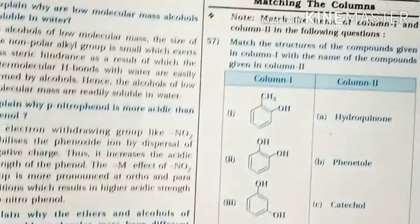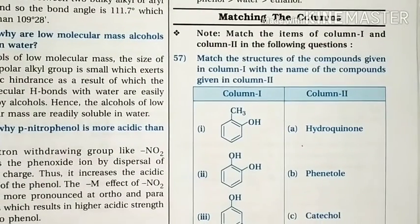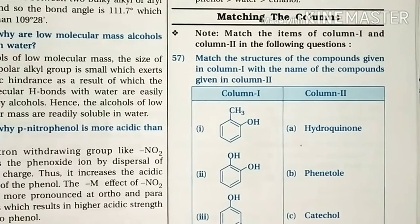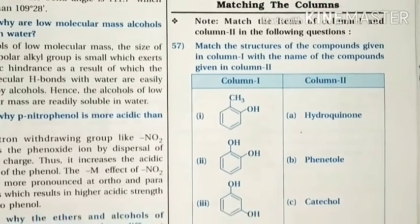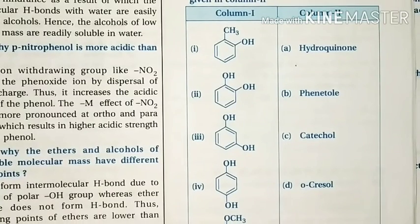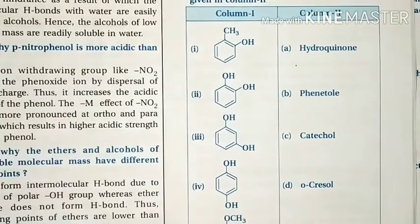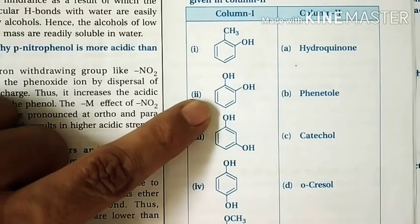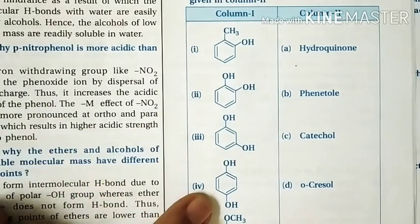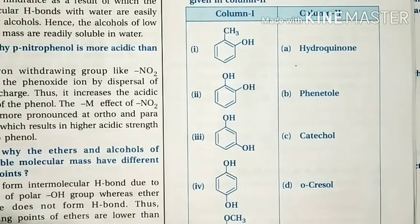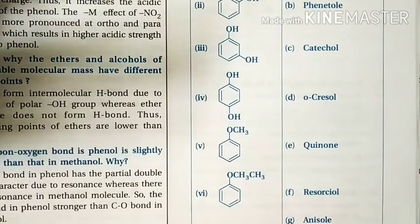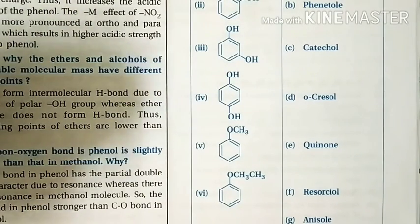Question 57: Match the following structures with their names. The answers are: ortho-cresol, catechol, resorcinol, quinol, anisole, and phenetole. This is a straightforward matching question.